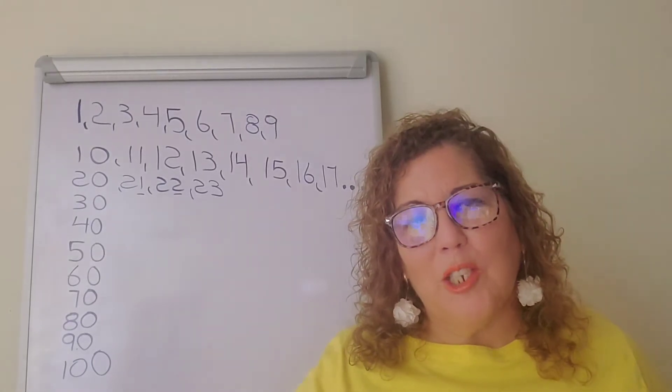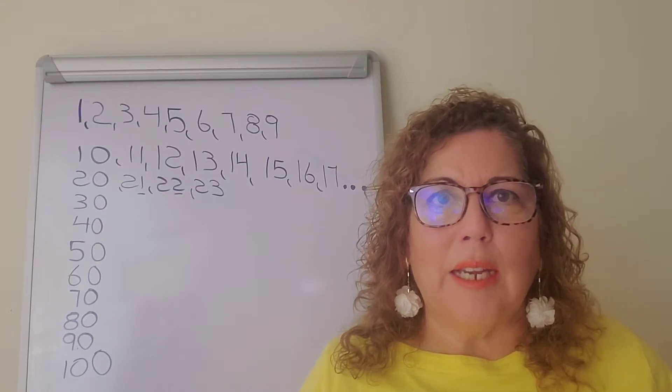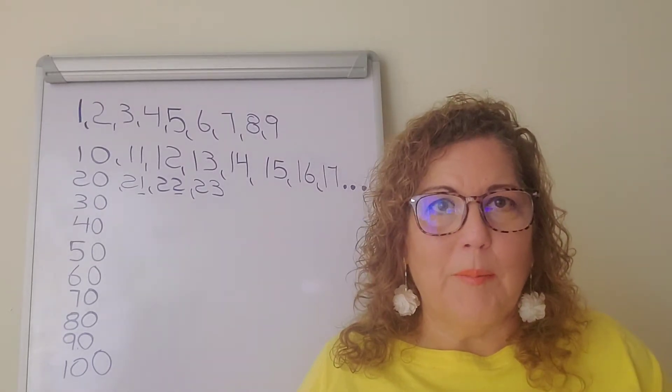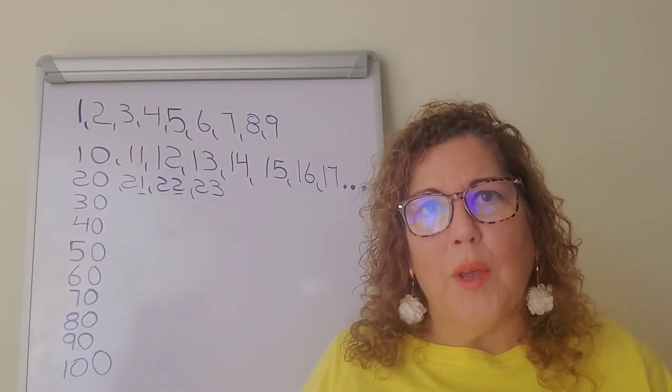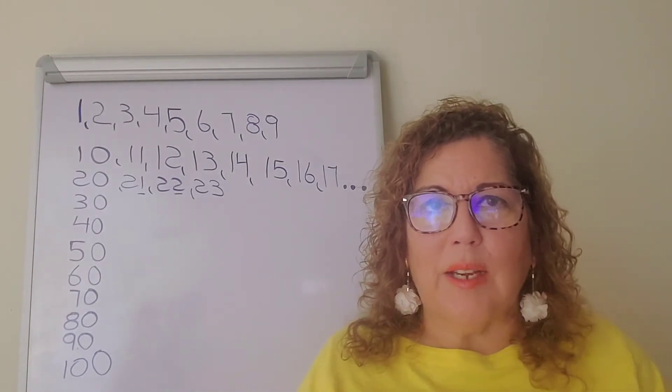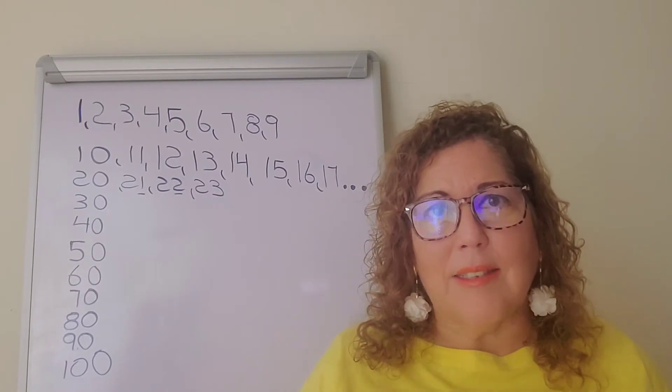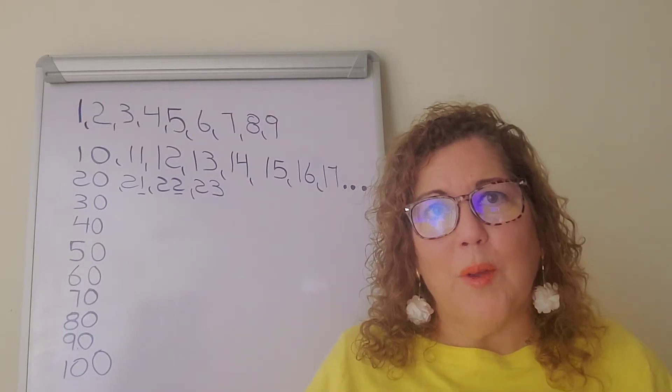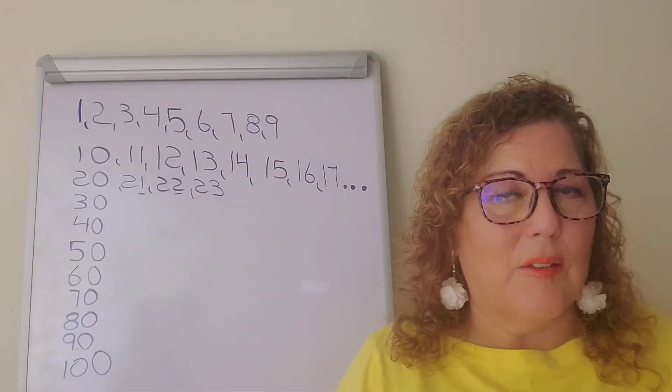Today we have a continuation of the last video where we talked about the names that we give to every number. We counted up to 9, so we have 1, 2, 3, 4, 5, 6, 7, 8, 9. We also learned that the next numbers are created by using these numbers here: 1, 2, 3, 4, 5, 6, 7, 8, 9.